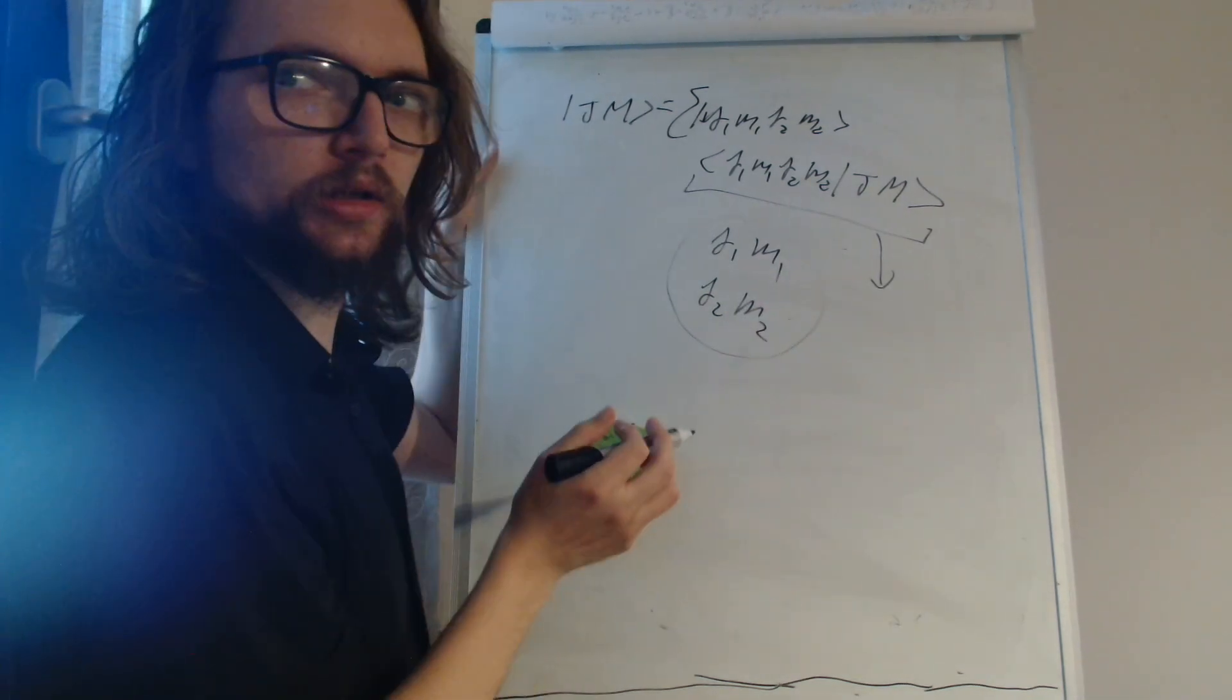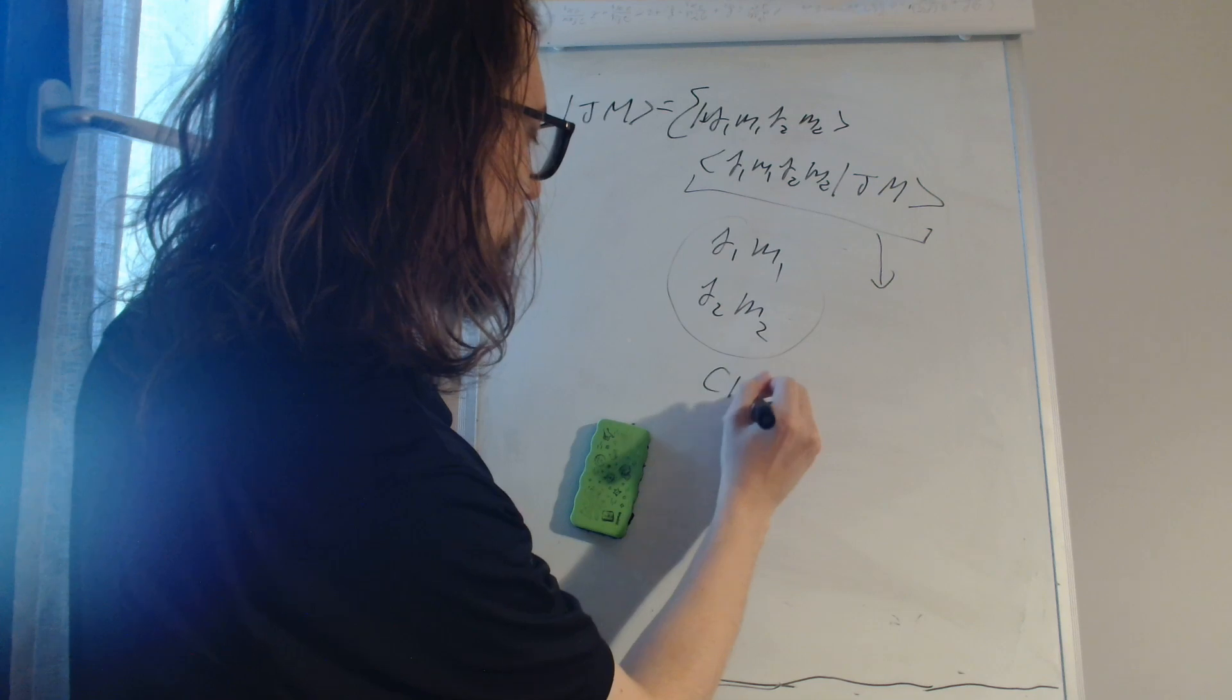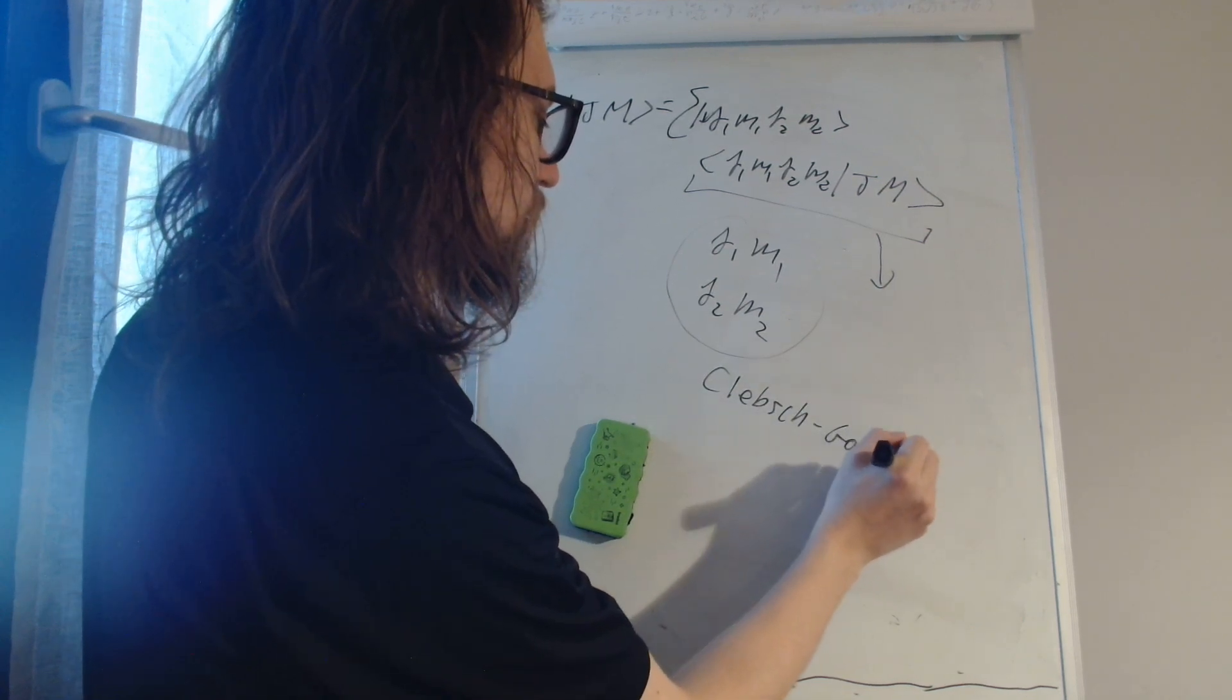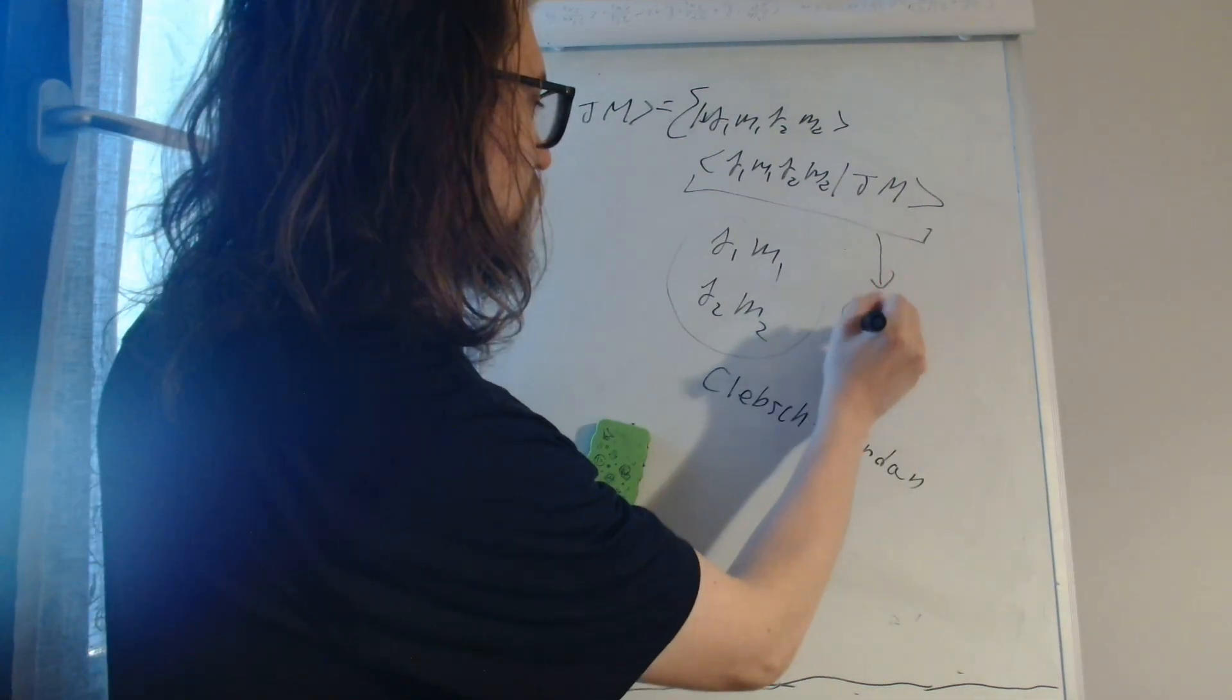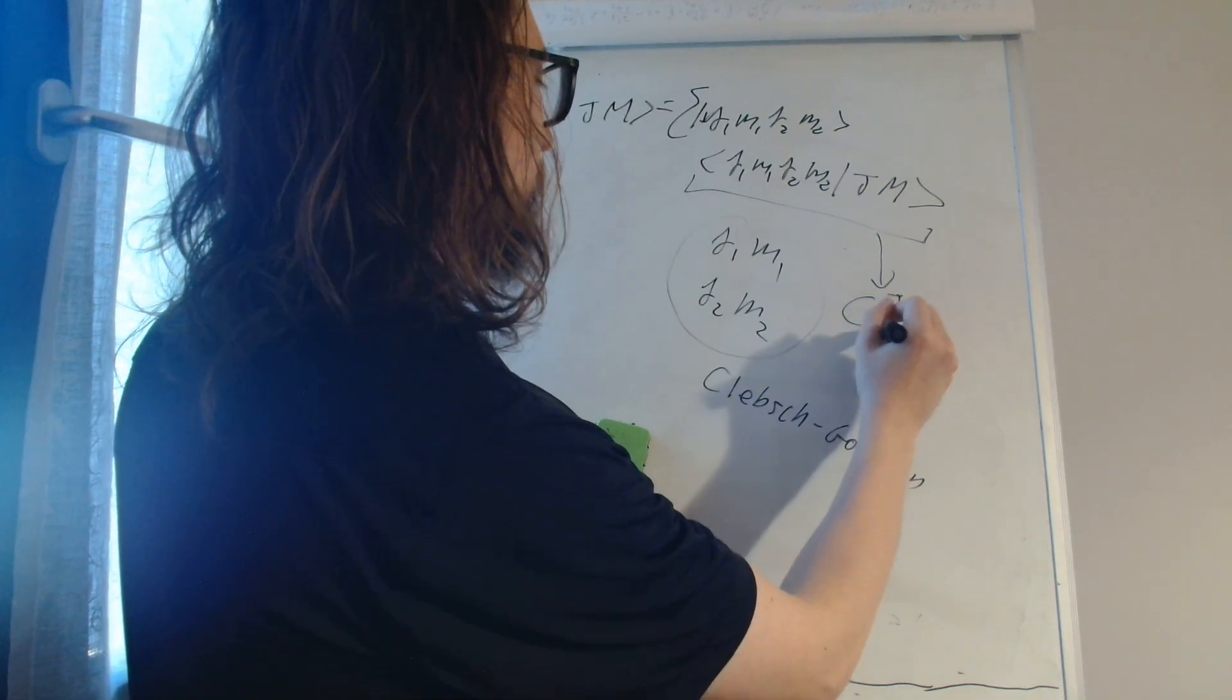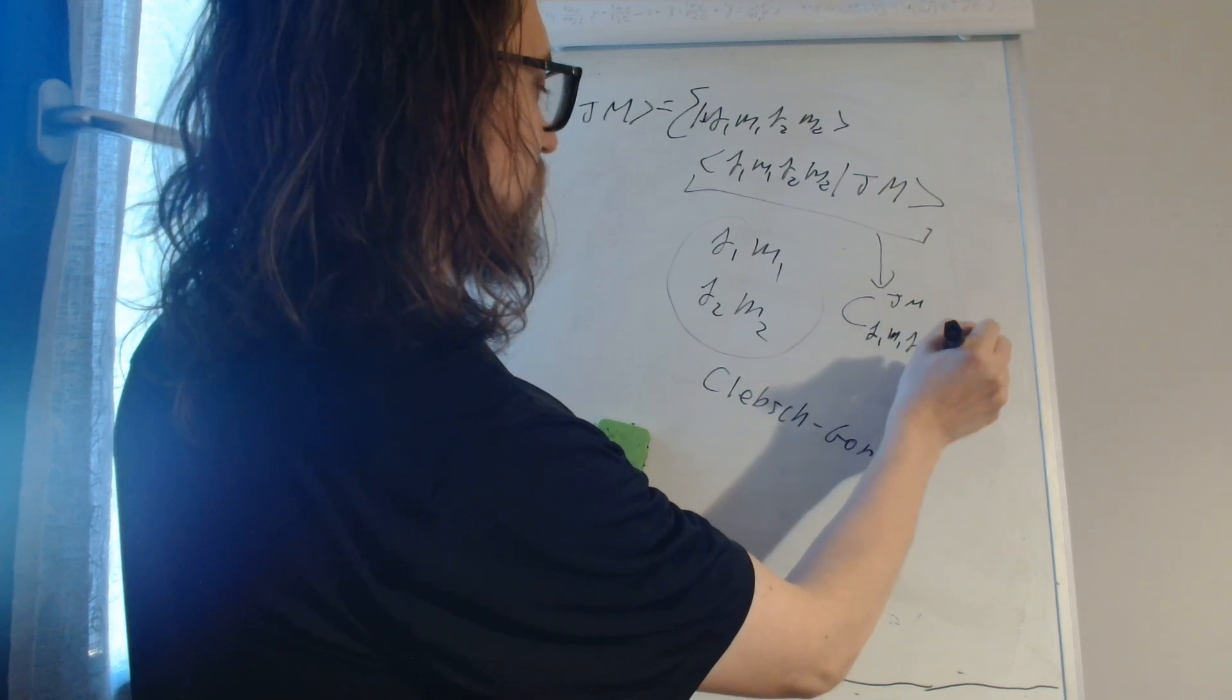I write it here: Clebsch-Gordan. They are usually written as C J M, J1 M1, J2 M2.